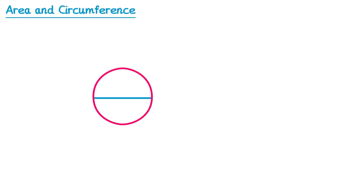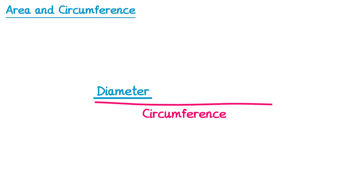If we take a circle like this one here, where the blue line is the diameter and the red line is the circumference, and then we unwind the circumference so it forms a straight line, an interesting question is how many times longer is the circumference compared to the diameter? If we take a second diameter, it's still not as long as the circumference. If we take a third one, it's almost there — there's just this extra bit here. So to get the length of the circumference, we need 3 and a bit diameters.